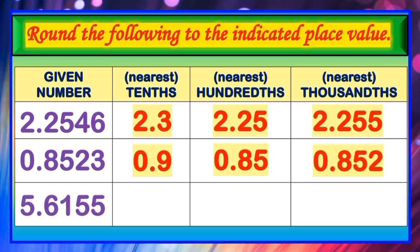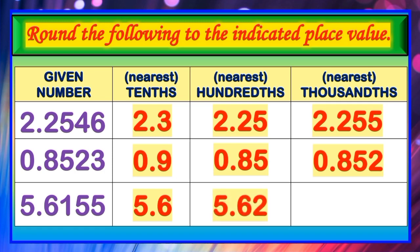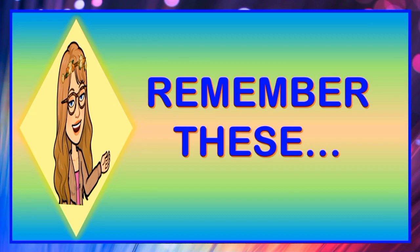The last number is 5 and 6,155 ten-thousandths. Nearest tenths, that would be 5 and 6 tenths. Nearest thousandths, that would be 5 and 616 thousandths.